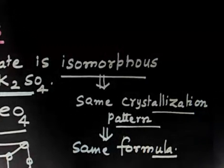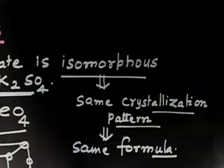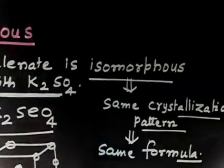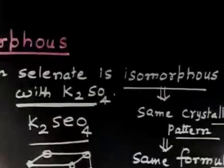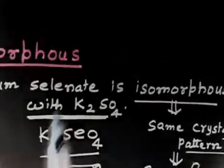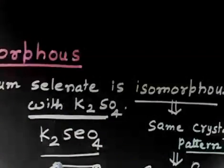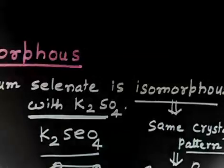If the crystalline pattern is the same, the formula will also be the same. So if potassium sulphate has the formula K2SO4, potassium selenate will have the analogous formula K2SeO4.